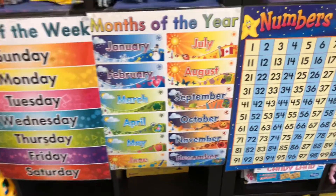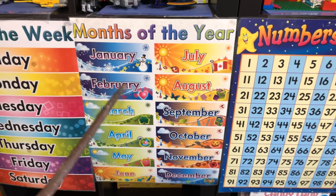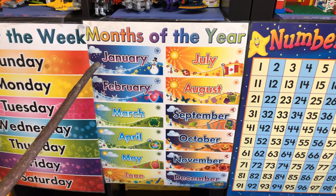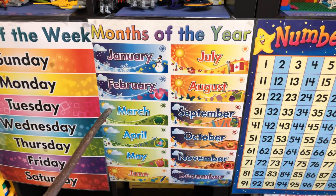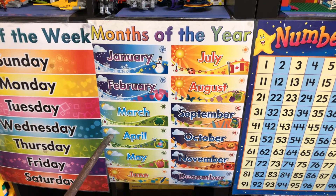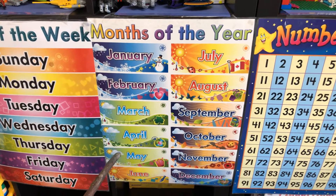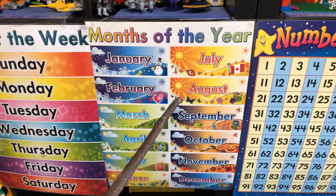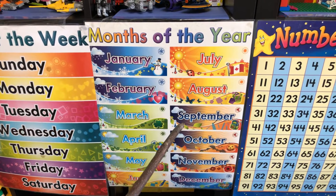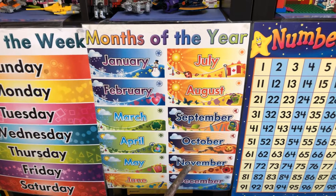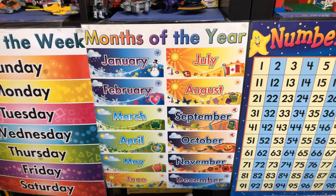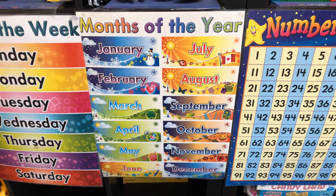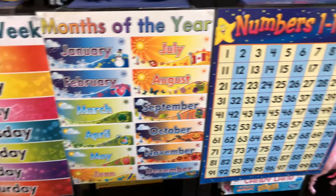We're going to move on to our months of the year — again, sing it with me. 1, 2, 3 — January, February, March and April, May, June, July and August, September, October, November, December. There are 12 months in a year. Great job.